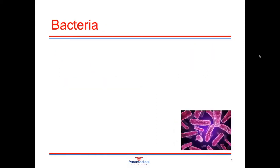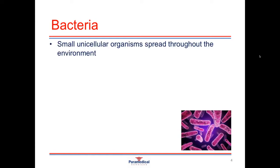Bacteria are the first pathogenic agent we'll look at. They are simple in structure and unicellular organisms spread throughout our environments. They have the ability to live independently of other organisms — bacteria do not need a human or animal host to survive. They are quite happy to survive, breed, and replicate on any kind of object such as a desk, shower floor, mobile phone, or money.